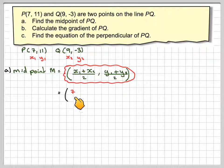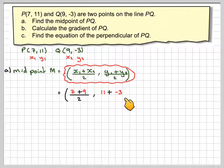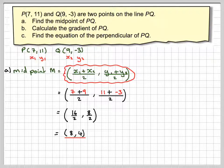So it's going to give 7 plus 9, divided by 2, and then 11 plus minus 3. Be careful with minus signs, divided by 2. 7 plus 9 is 16, over 2, and 11 minus 3 is 8, over 2. So it gives us a nice point of 8, 4.